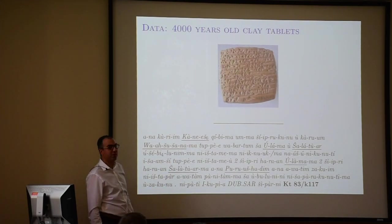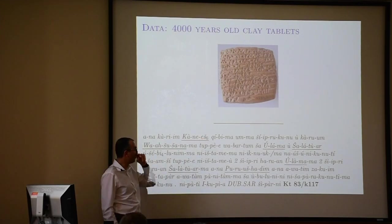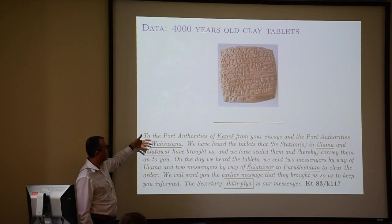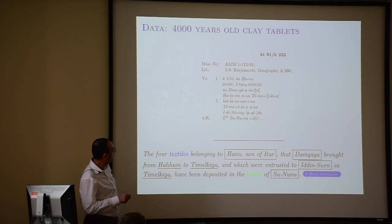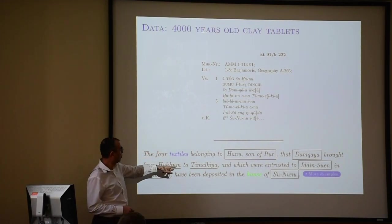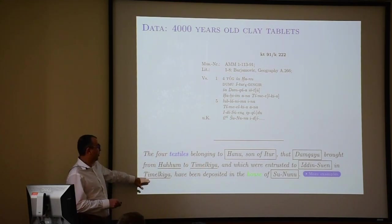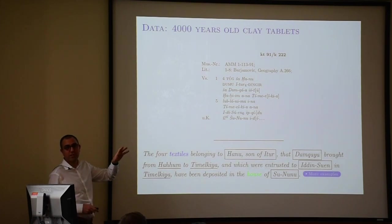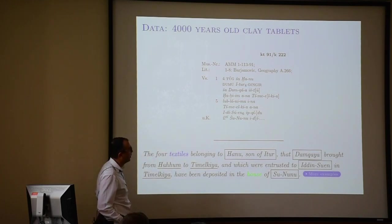The first step is to search among thousands of tablets to identify the ones that mention at least two of those cities. One tablet has a translation describing a shipment from one city to another via other places. Another describes four textiles belonging to someone that another merchant brought from Hahum to Timalkia — direct evidence for a trade flow from city I to city J, entrusted to another person at the destination and deposited in the warehouse of a third party. One potential future project is to look at the merchant networks, though it's hard to disambiguate similar names.